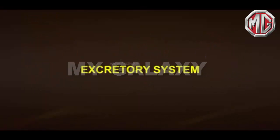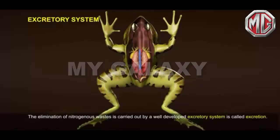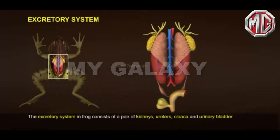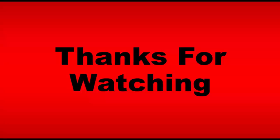Excretory System: The elimination of nitrogenous wastes is carried out by a well-developed excretory system, a process called excretion. The excretory system in frog consists of a pair of kidneys, ureters, cloaca and urinary bladder.